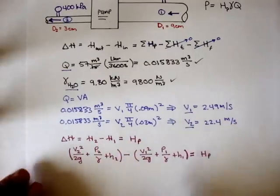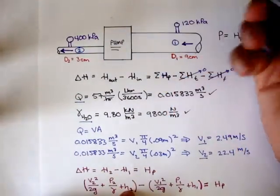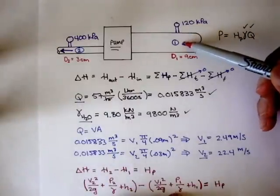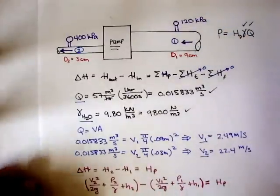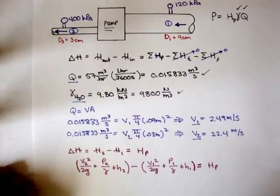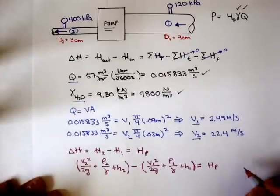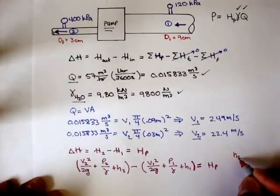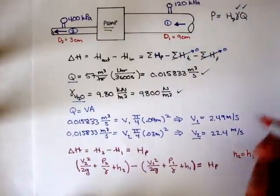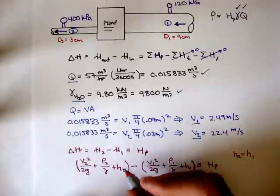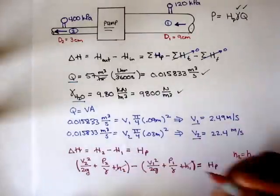At point 2, we have velocity, pressure, and height. At point 1, we also have velocity, pressure, and height. But if you can see, there's no major change in elevation, so we can say h2 equals h1. If that's true, h2 minus h1 is just zero, so these terms cancel out.